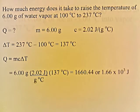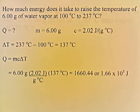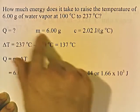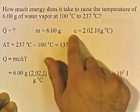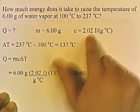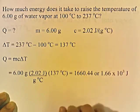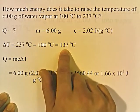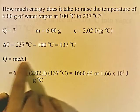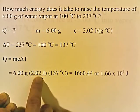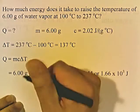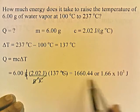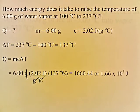How much energy does it take to raise the temperature of 6 grams of water vapor at 100 degrees Celsius to 237 degrees Celsius? M is 6 grams, C is 2.02 joules per gram degree Celsius, and delta T is 237 minus 100, which is 137 degrees. Q equals MC delta T: 6 times 2.02 times 137. Grams cancel, degrees Celsius cancels, leaving joules. The result is 1.66 times 10 to the third joules.